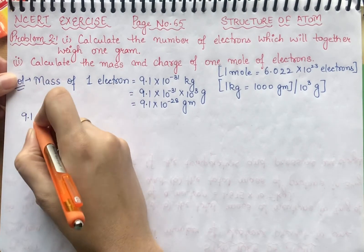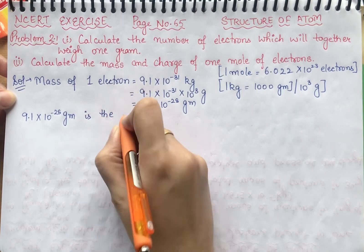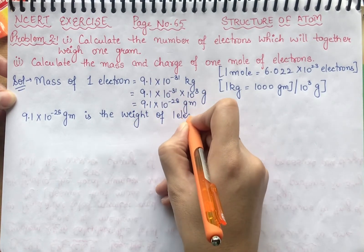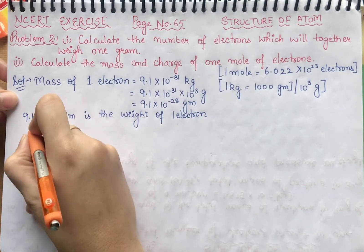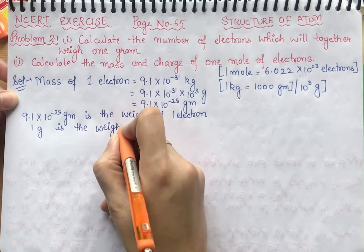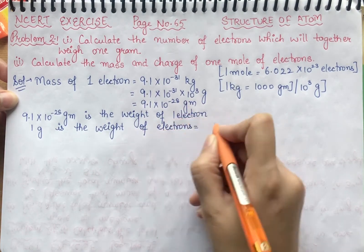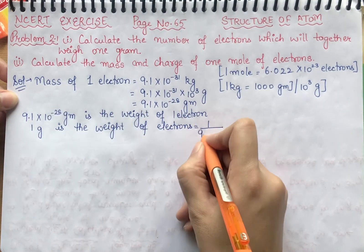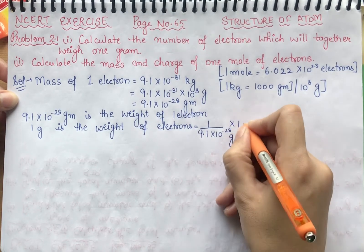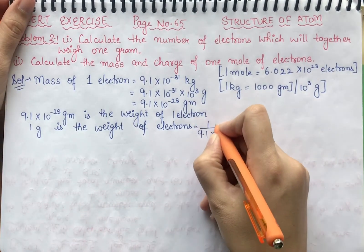So 9.1 into 10 raised to power minus 28 grams is the weight of 1 electron. Now, 1 gram is the weight of how many electrons? We apply the unity method: number of electrons equals 1 divided by 9.1 into 10 raised to power minus 28 grams, multiplied by 1 gram. Gram cancels with gram.